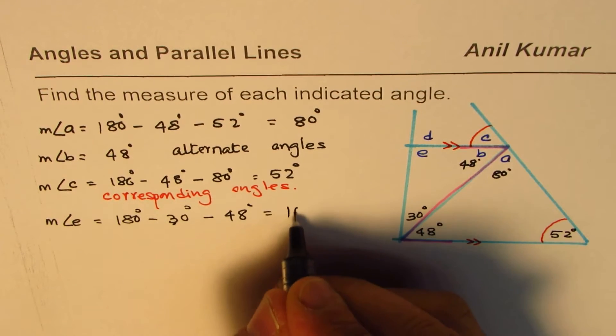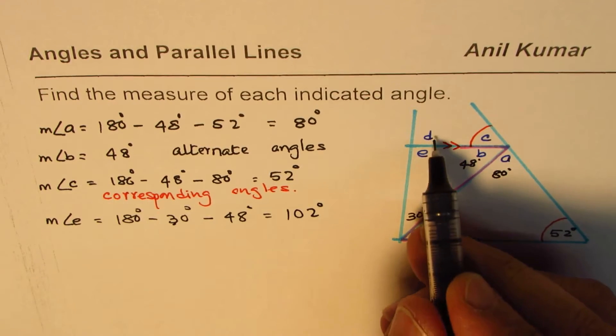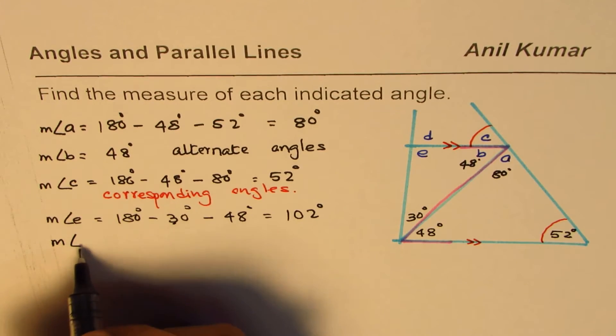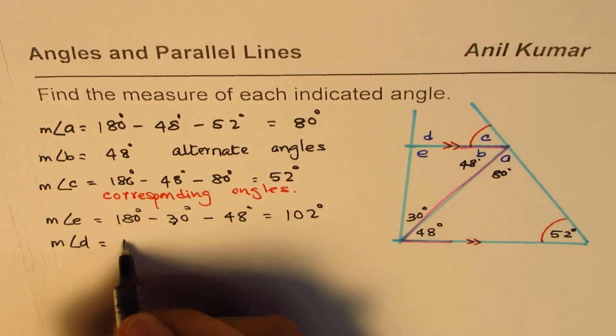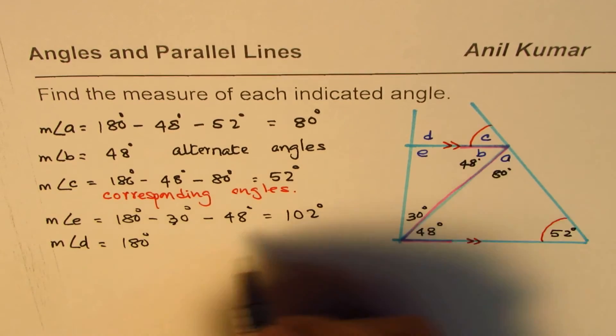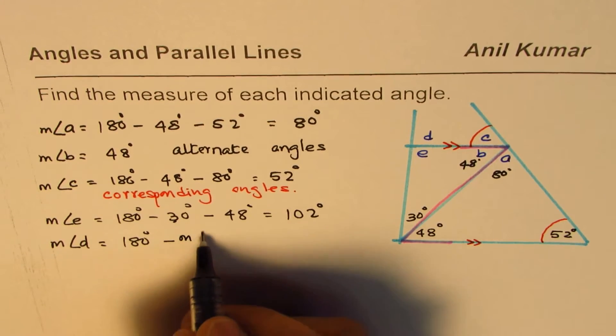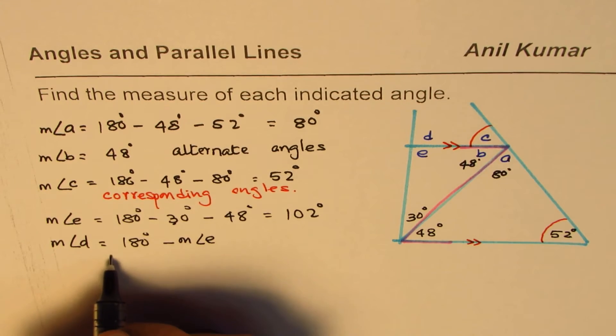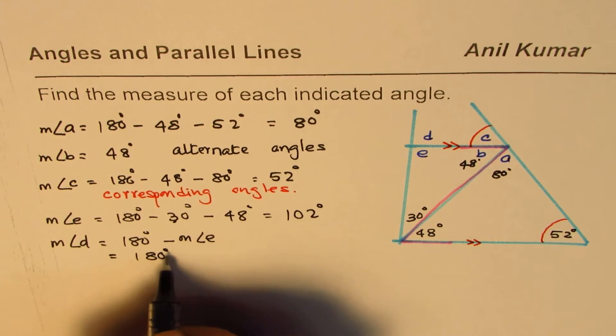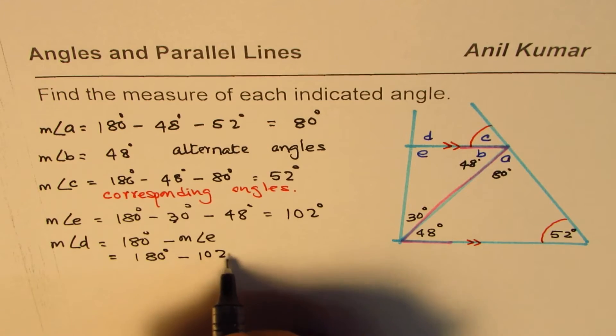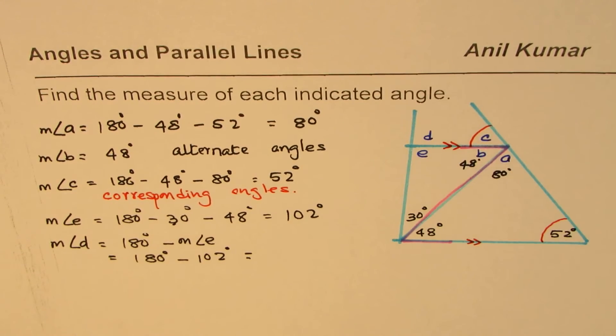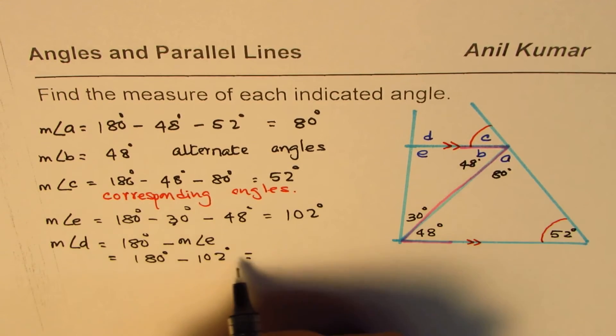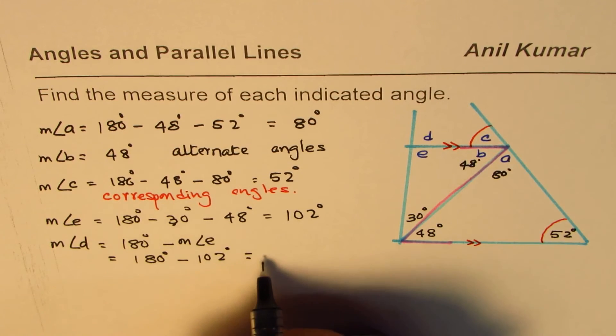Measurement of angle D will be equals to 180. It's a linear pair minus measurement of angle E, which is equal to 180 degrees take away 102 degrees. So that is how you find D. It is 78 degrees.